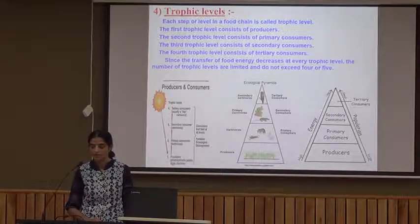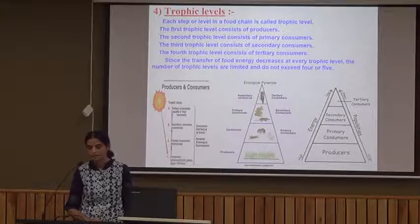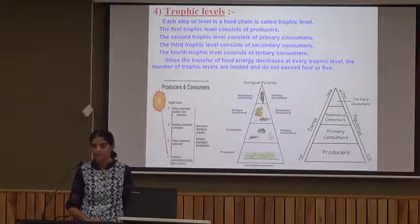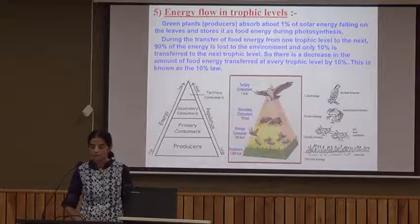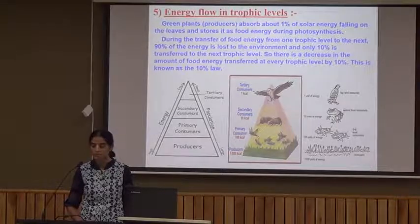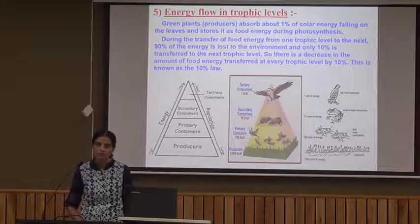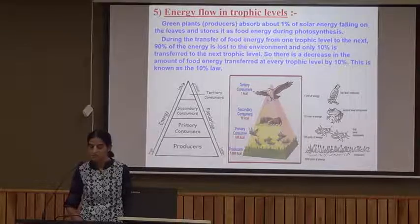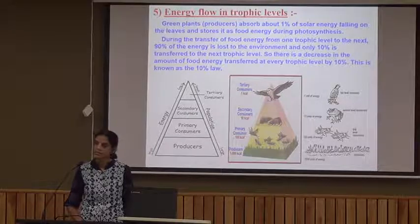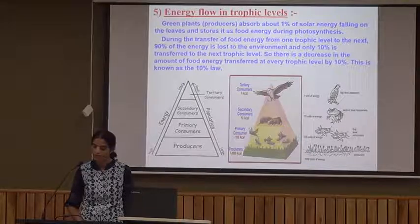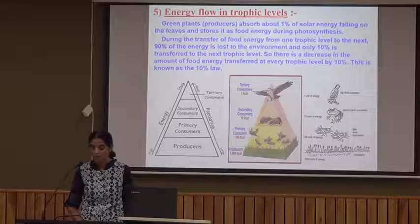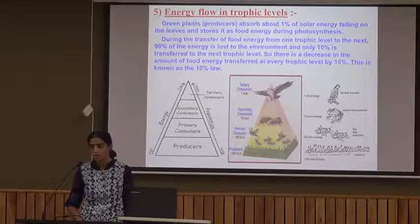At each trophic level there is a decrease in energy, so when we reach the top of the food chain the energy received will be very less if the trophic levels exceed in number. Green plants, that is producers, absorb about 1% of solar energy falling on the leaves and store it as food energy during photosynthesis. During the transfer of food energy from one trophic level to the next, 90% of the energy is lost to the environment and only 10% is transferred to the next trophic level. This is called the 10% law of energy.